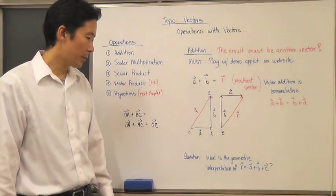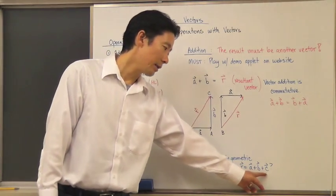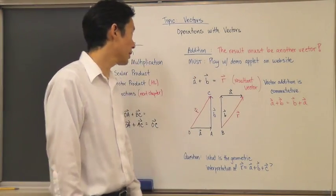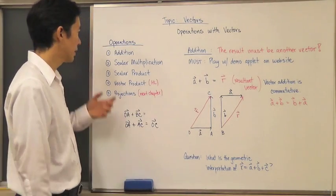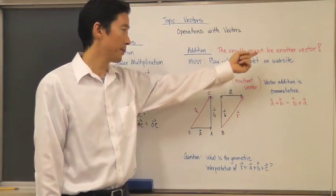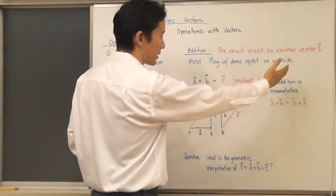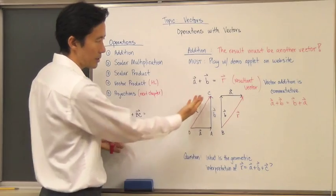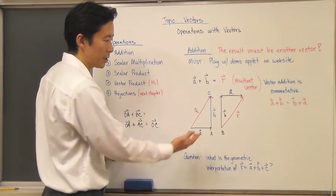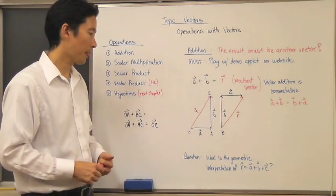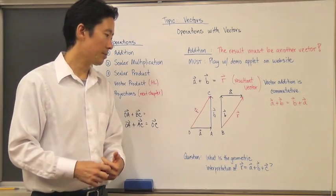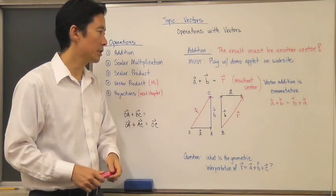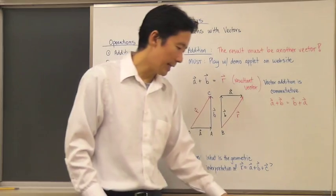One thing that's also important to consider is the geometric interpretation of adding three vectors a, b, and c together. I invite you to take a look at the applet on the website. So there we go — we've started with our first operation with vectors, which is vector addition. Remember that the result must be another vector. If you play with the demo on the website, you'll be able to see that vector addition is indeed commutative. We'll go ahead and take a look at the geometric interpretation of the sum of three vectors, and we'll focus on addition. See you in class, bye.